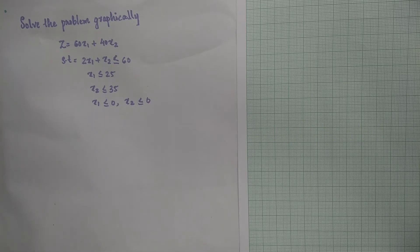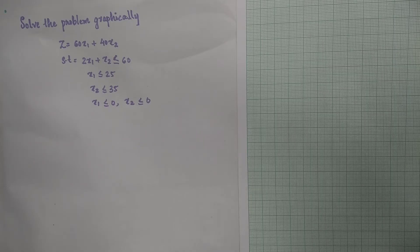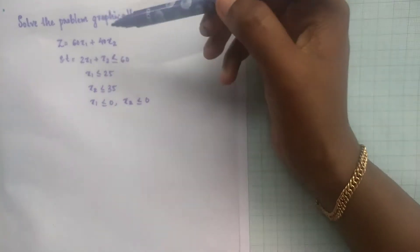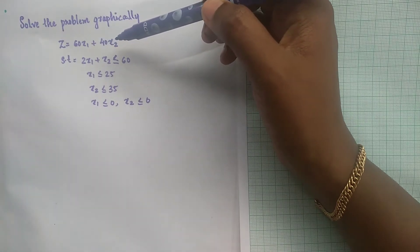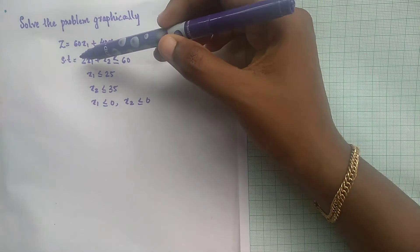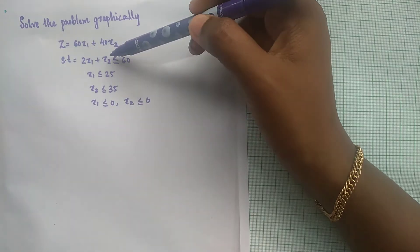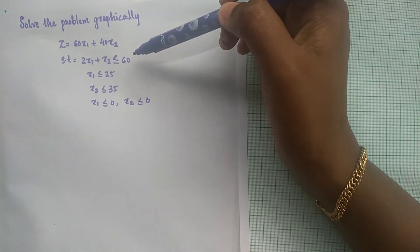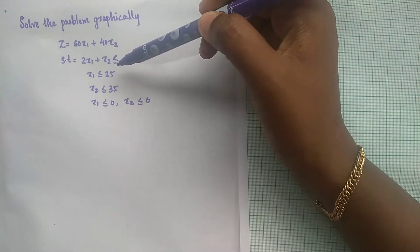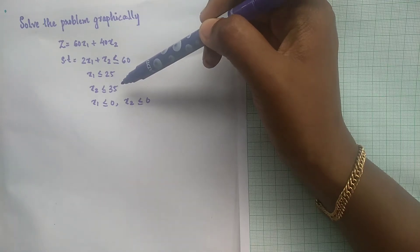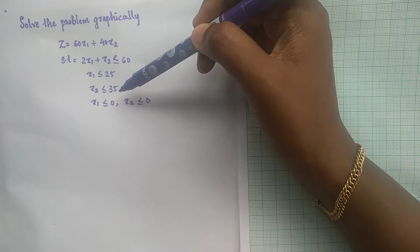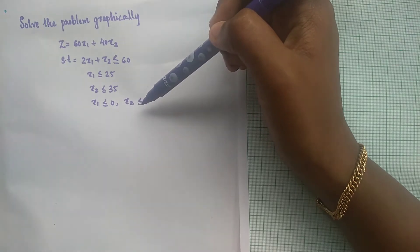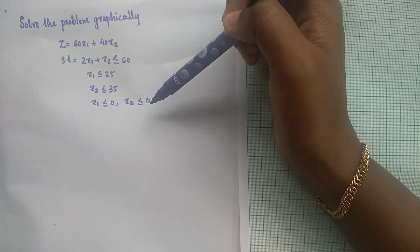Hi students, today we are going to discuss how to solve a linear programming problem graphically. The question is: solve the problem graphically. Z is equal to 60x1 plus 40x2, subject to the constraints: 2x1 plus x2 less than or equal to 60, x1 less than or equal to 25, x2 less than or equal to 35, and x1 greater than or equal to 0 and x2 greater than or equal to 0.